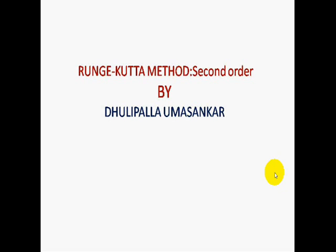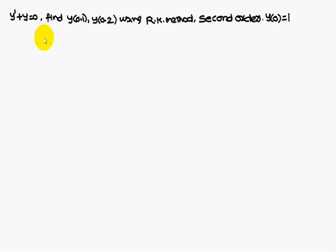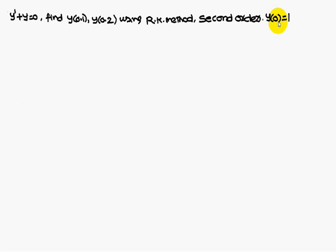Today we are going to discuss the Runge-Kutta method second order. The problem given is y' + y = 0. Find y(0.1) and y(0.2) using the RK method second order, when y(0) = 1.